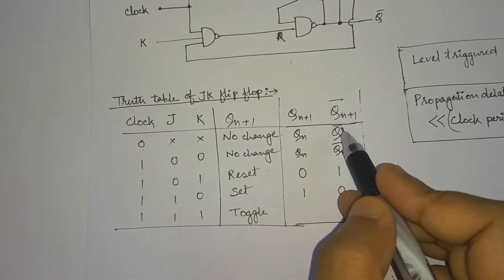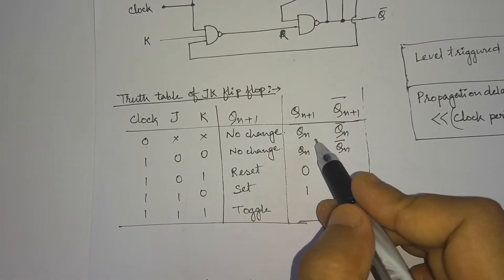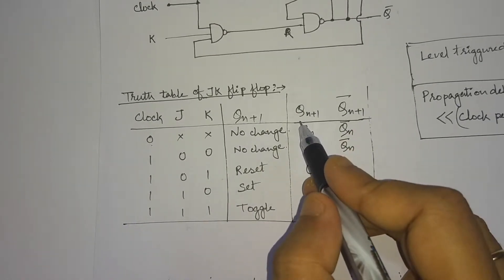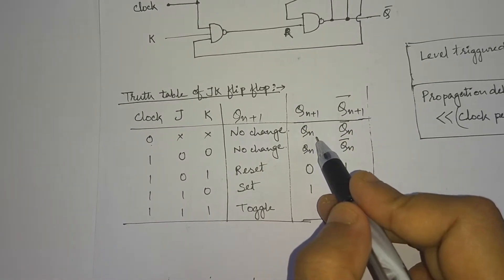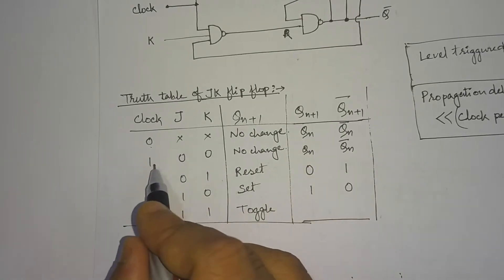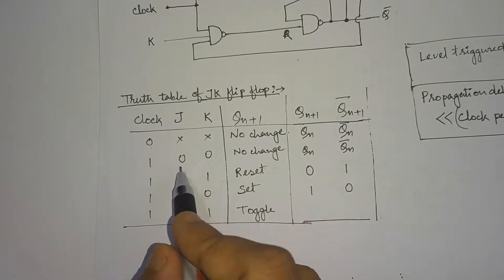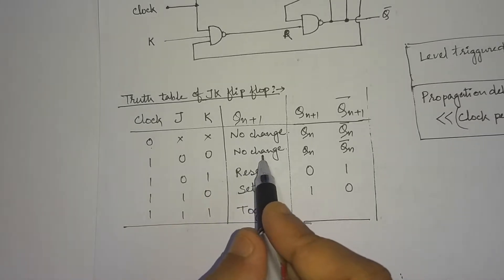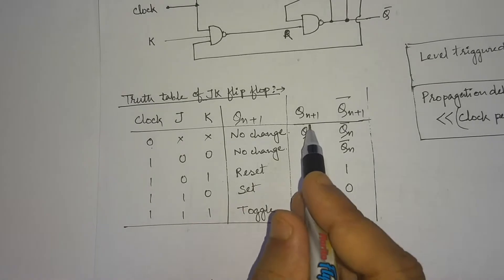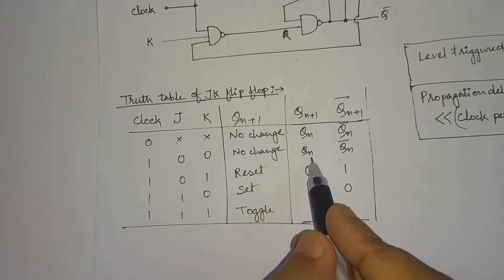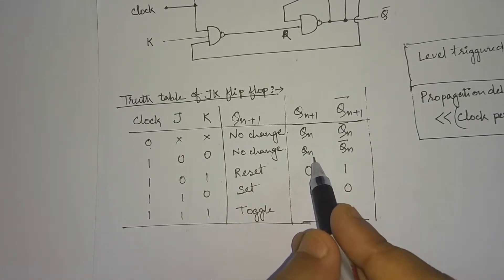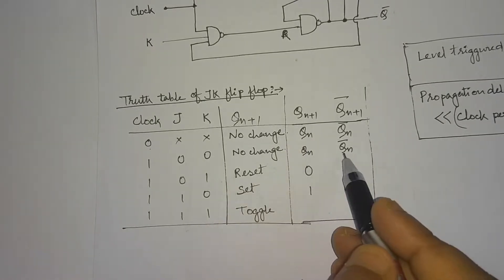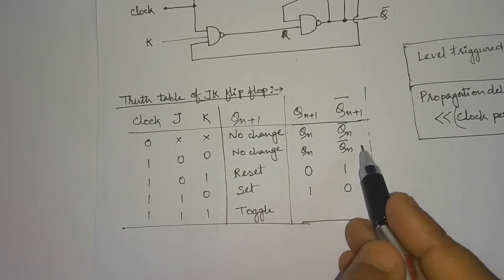Q-bar is just the complement of the present output — the next state complement. When the clock is high and J=0, K=0, we have no change, meaning the next state output equals the present state output: Qn+1 = Qn. Similarly for the complemented output.